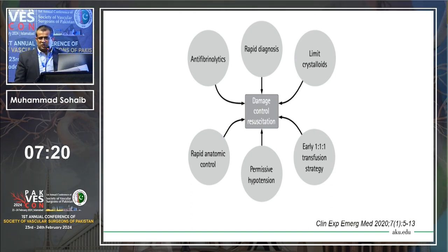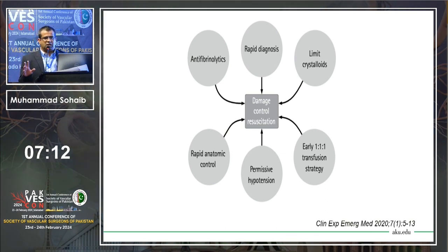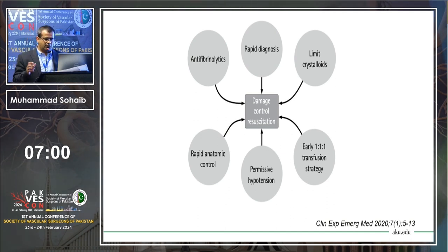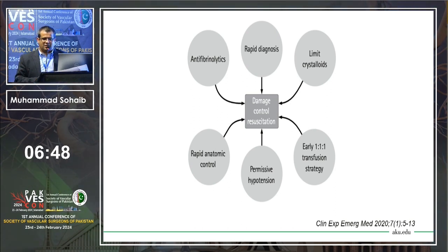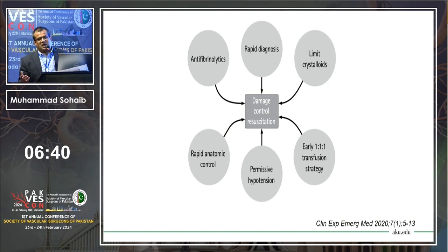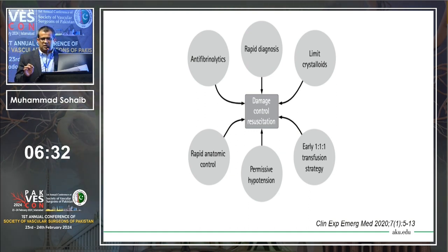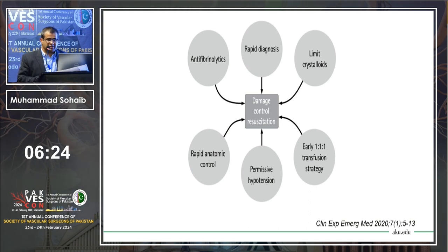Permissive hypotension: the ideal blood pressure during damage control resuscitation. Most literature targets 90 mmHg systolic, but not for traumatic brain injury patients — in those cases, systolic blood pressure should be above 100 mmHg. Then there is the 1:1:1 ratio of transfusion — packed red blood cells, FFP, and platelets. This data comes from American soldiers in Iraq, later validated in civilian trauma. This strategy is one of the most promising in preventing mortality and morbidity in patients requiring massive blood products.